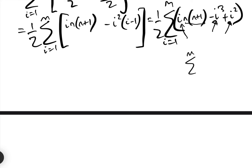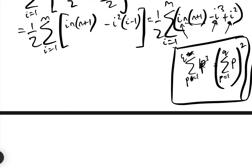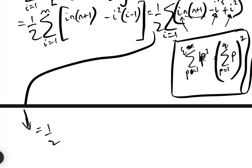The sum of the first m cube numbers — the sum from k equals 1 to m of k cubed — equals the square of the sum of the first m natural numbers. It's not very well known, but it's a useful identity. Going back to our question, we have equals one half times the sum between i equals 1 and m of i times n(n+1), minus i cubed, plus i squared.